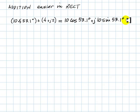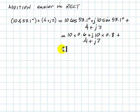And to that, we are going to add 4 plus j2. Let's do the computation. The cosine of 53.1 degrees, that is 0.6, and the sine of that angle is 0.8. We are to add that with this number. In short, we get 6 plus j8, that is added with 4 plus j2, that is 10 plus j10.